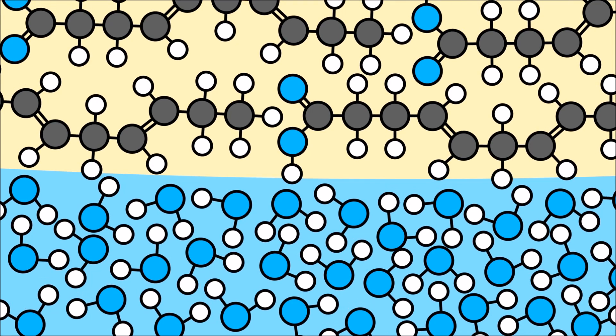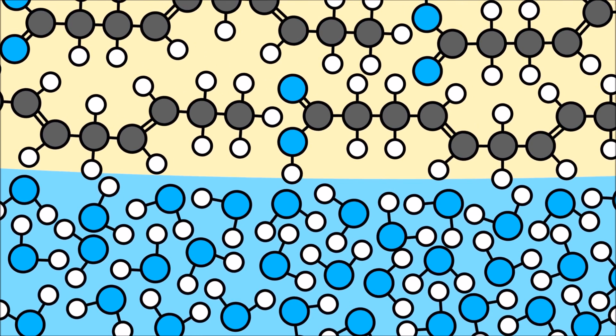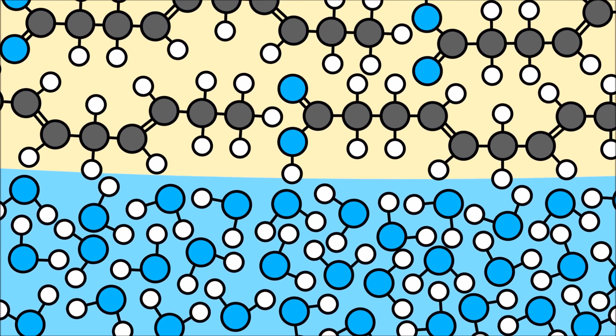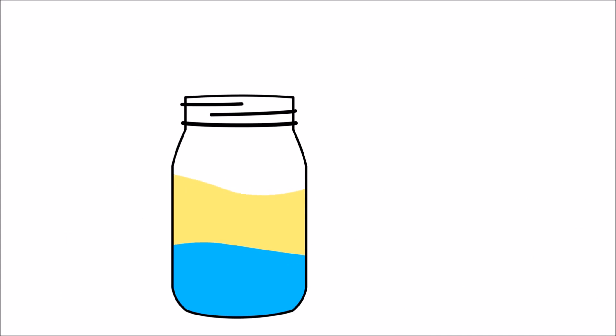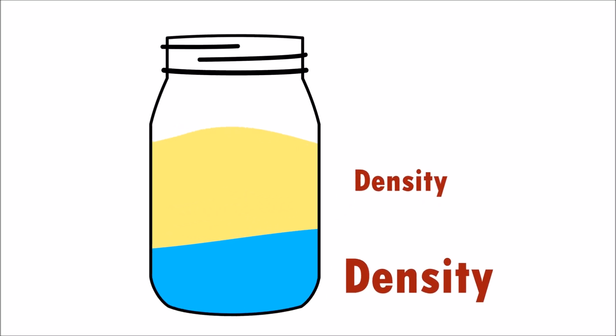This is because the molecules in the water and the molecules in the oil don't bond with each other. Oil is also less dense than water. This is why it floats on top of the water.